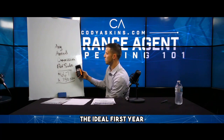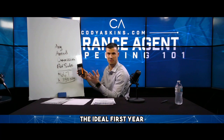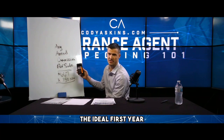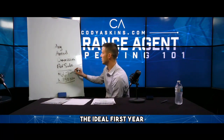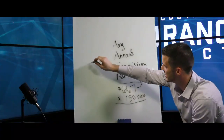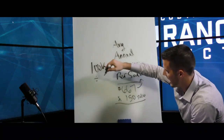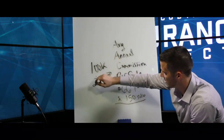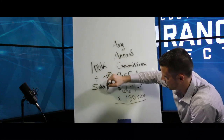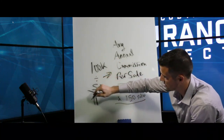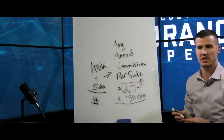That comes out to $666.67 — round that up and that's $667 per sale. You've got to figure out what yours is. You need to take $100,000 divided by whatever your average commission per sale is, and that'll tell you the number of insurance policies you need to write.